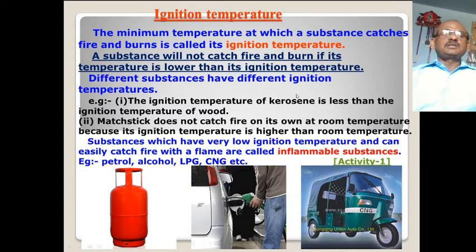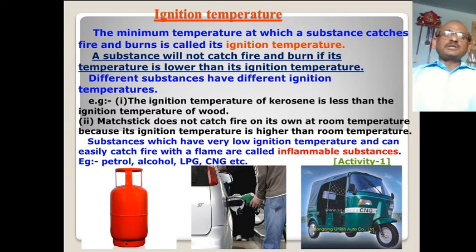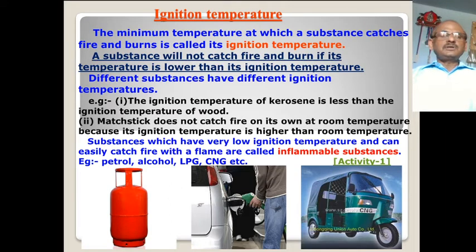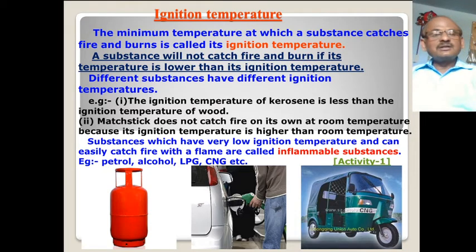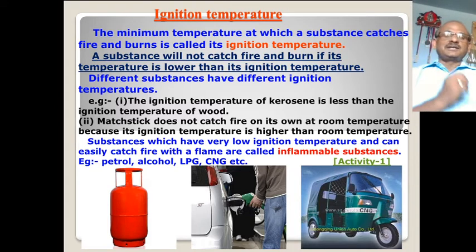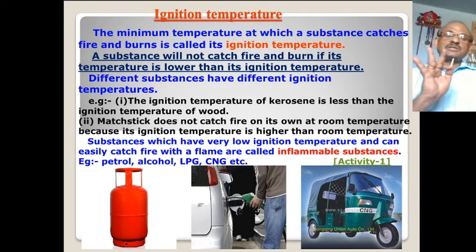The minimum temperature at which a substance catches fire and burns is called its ignition temperature. A substance will not catch fire and burn if its temperature is lower than its ignition temperature. For example, the ignition temperature of kerosene is less than the ignition temperature of wood.